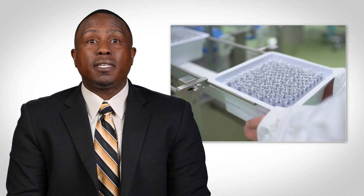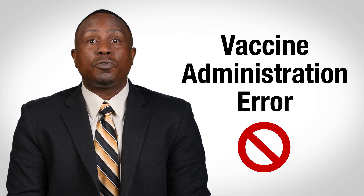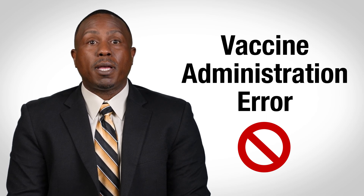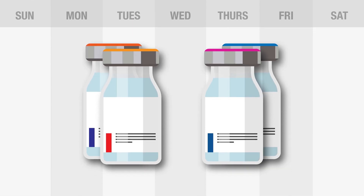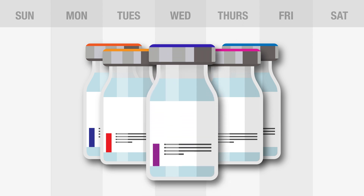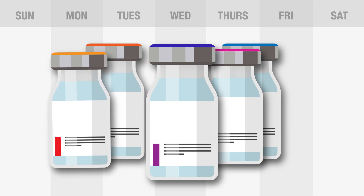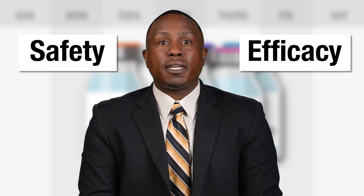Administering a vaccine past the expiration date or the BUD is considered a vaccine administration error. Several best practice strategies can be followed to help prevent this from happening. First, check expiration dates of your entire vaccine stock weekly. Place those with an earlier expiration date in the front so they can be used first. Remove any expired vaccines from the storage unit and discard. Ongoing monitoring of expiration and BUD dates is critical for inventory management and to ensure the safety and efficacy of vaccines.